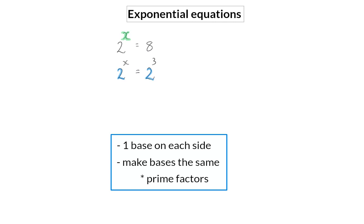So for this equation to be true, or the two sides to be equal, the exponent on the left also has to be the same as the exponent on the right. So when the bases are the same, I can make the conclusion that the exponent on the left, which is x, will be the same as the exponent on the right, and then we have solved the equation.